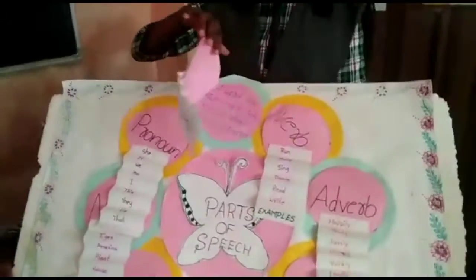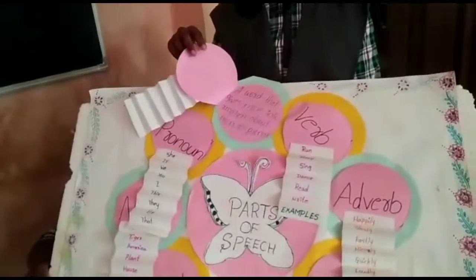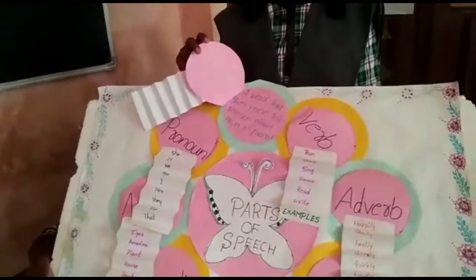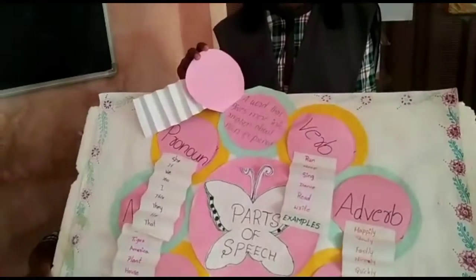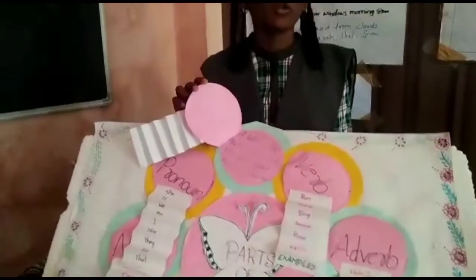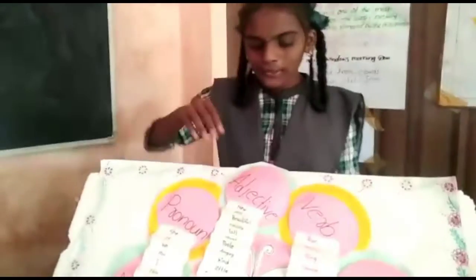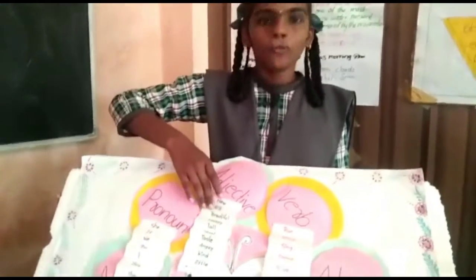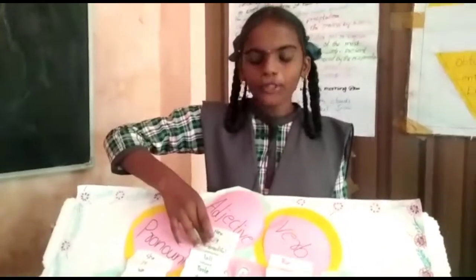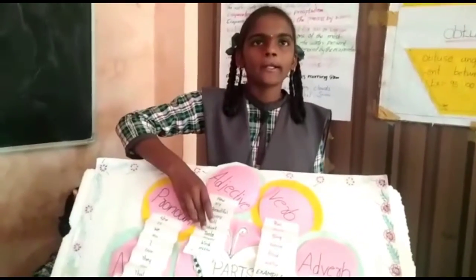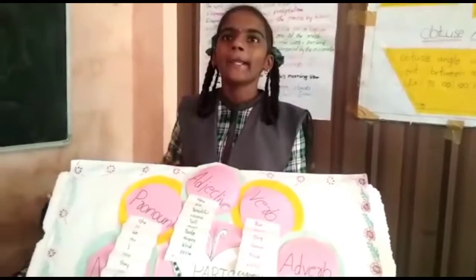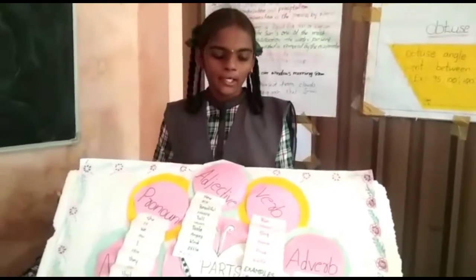Adjective: A word that gives more information about a noun or pronoun. Examples: new, big, beautiful, happy, tall, short, tasty, angry, kind, little.